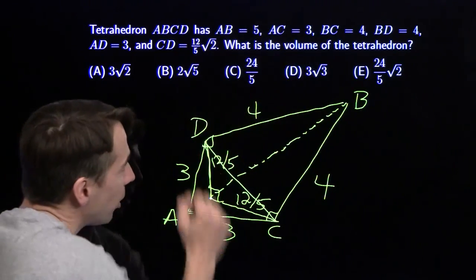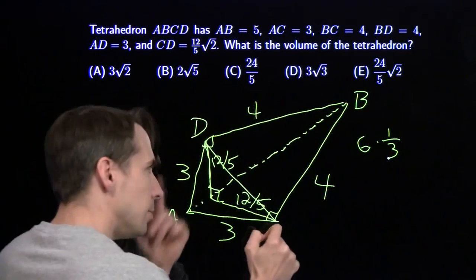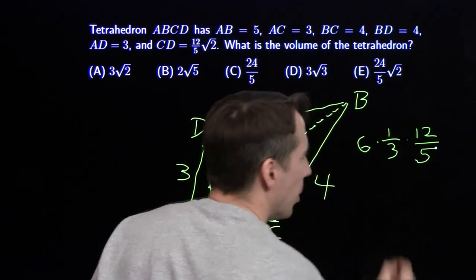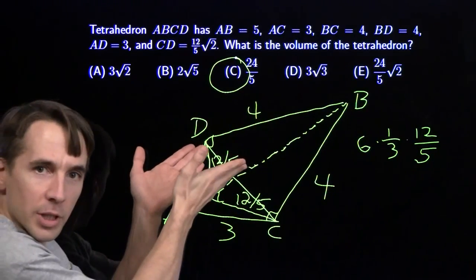So now we can find the volume of the tetrahedron. The area of the base is six times one-third times that elusive altitude times twelve-fifths. Six divided by three is two times twelve-fifths is twenty-four-fifths. And we're done.